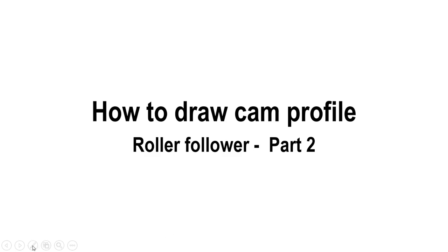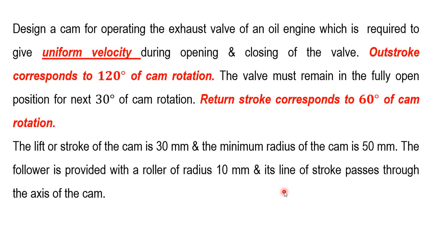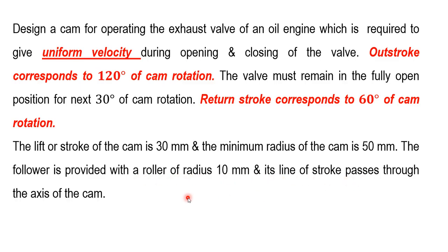In this video we will try to understand how to draw a cam profile in the case of a roller follower. We have to design a cam for operating the exhaust valve of an oil engine, which is required to give uniform velocity during opening and closing of the valve. The outstroke corresponds to 120 degrees of cam rotation. The valve must remain in the fully open position for the next 30 degrees of cam rotation. The return stroke corresponds to 60 degrees of cam rotation. The lift or stroke of the cam is 30 mm and the minimum radius of the cam is 50 mm. The follower is provided with a roller of radius 10 mm and its line of stroke passes through the axis of the cam.